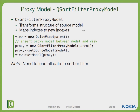Here we see a sample of how to create a QSortFilterProxyModel. We just created it, set the source model to our existing model, and then set the model of our view to the proxy model.